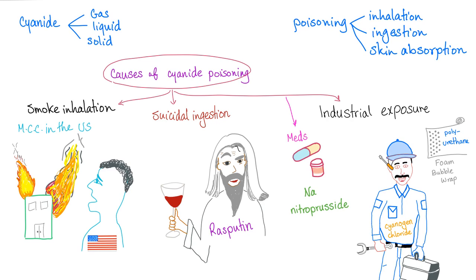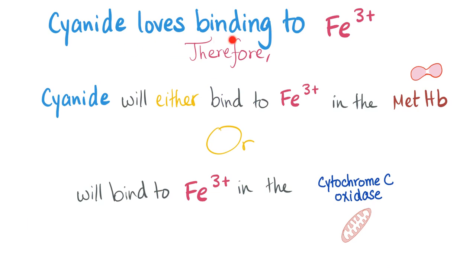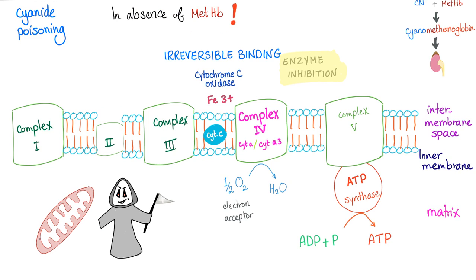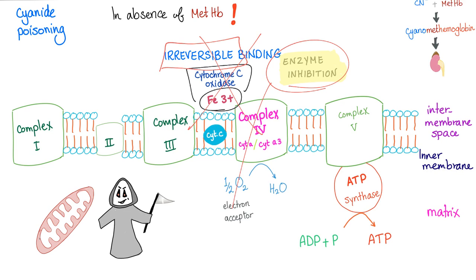Cyanide loves binding to ferric. Therefore, cyanide will either bind to ferric in the methemoglobin or will bind to ferric in the cytochrome C oxidase in your mitochondria. In the absence of methemoglobin, cyanide has no choice but to bind the ferric in cytochrome C oxidase. This enzyme is then gone — irreversible binding, enzyme inhibition. Complex 4 is now gone.